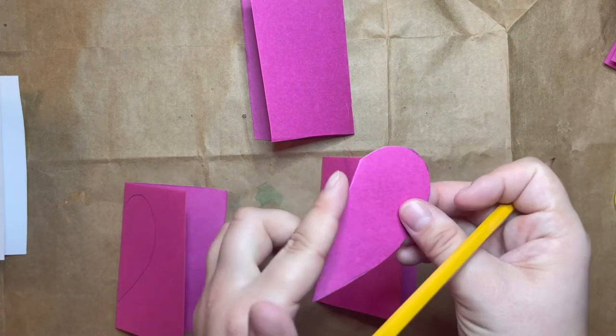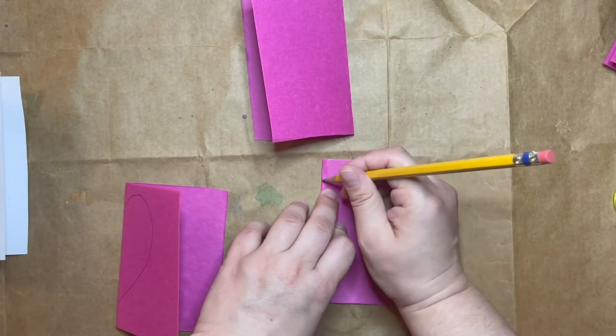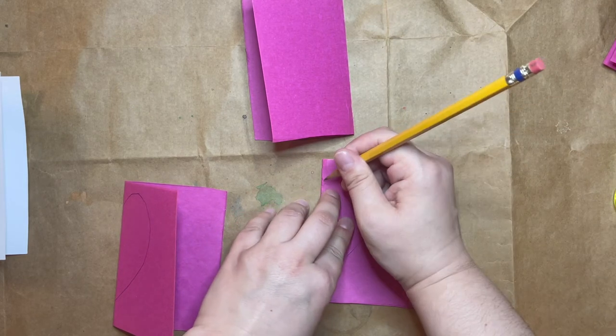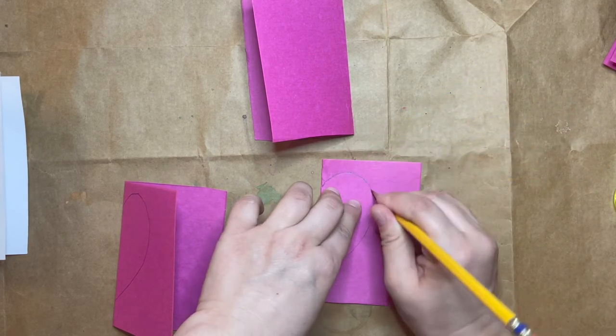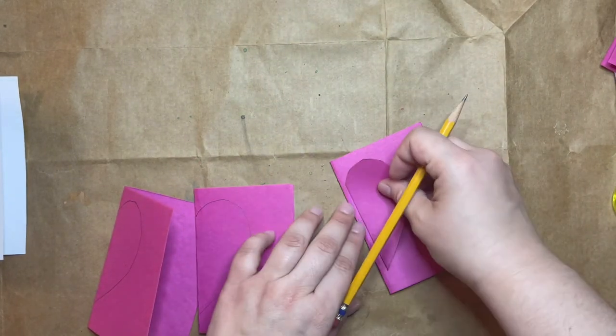Make sure that you touch the folded edge to the folded edge while you're tracing. Remember, if you want to make yours a different shape, all you have to do is trace out that shape instead of the heart shape.